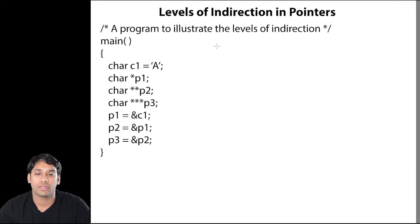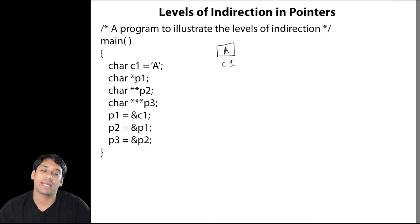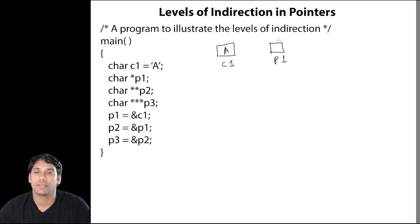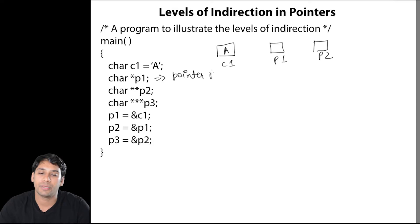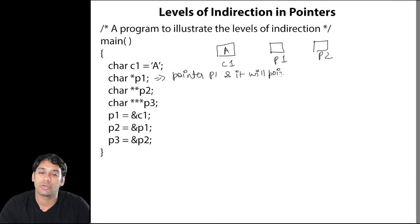In this program, C1 is a character variable and it is storing capital A. Then we are having character star P1, that means P1 is a pointer of type character. Then we are having double star P2, so this is a pointer P2. That means P1 is a pointer and it will point to a character variable.